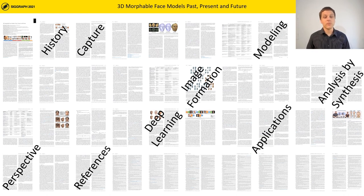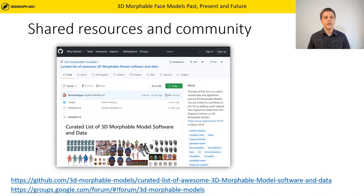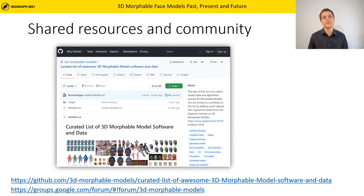If you want to hear more about our survey paper, we invite you to watch our full presentation that contains more details on each section. We hope you enjoyed this brief overview and also hope that you will enjoy reading the survey paper. Together with the paper we started a list of shared resources around 3D Morphable Models on GitHub, which we intend to keep up to date and look forward to your contributions. If you are interested to hear about events or announcements in the community, please join our Google group.